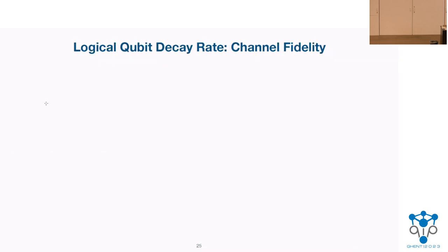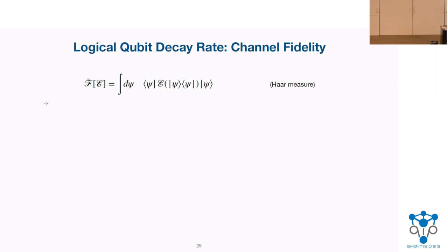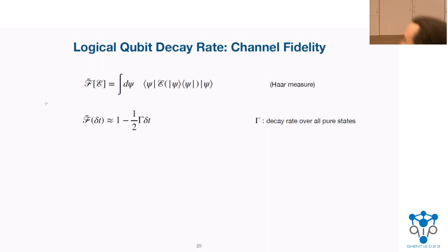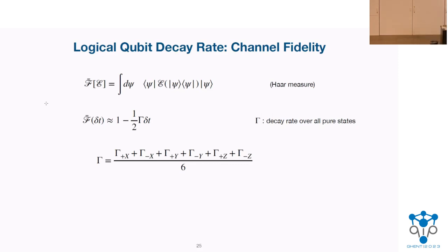To show the decay curves and compute QEC gain, we used channel fidelity to characterize these decay curves — the fidelity of the overlap of your state with the state that underwent a certain channel (the stabilization routine and error). This fidelity decreases exponentially under the photon loss error channel, so by fitting an exponential to the decay curve you get the decay rate. Mike Nielsen showed that this decay rate is equivalent to averaging the decay curves over the six cardinal points on the Bloch sphere — plus/minus X, plus/minus Y, plus/minus Z — making our life simpler. The QEC gain is the ratio of lifetimes, equal to the ratio of physical error rate to logical error rate.